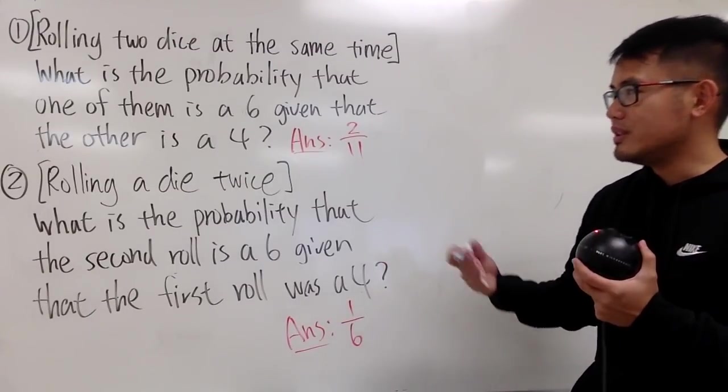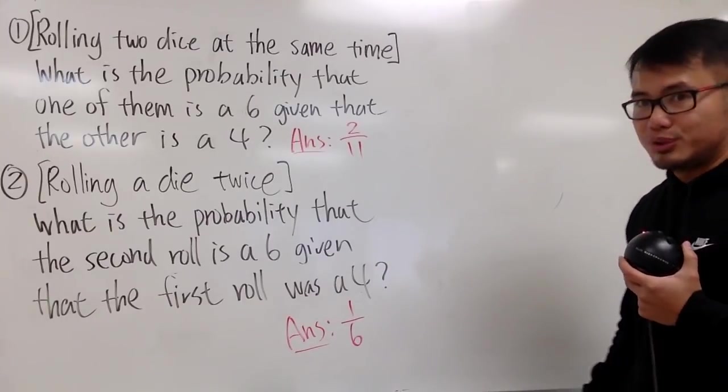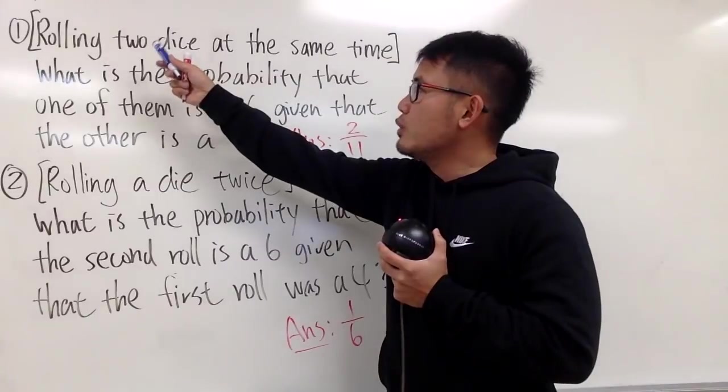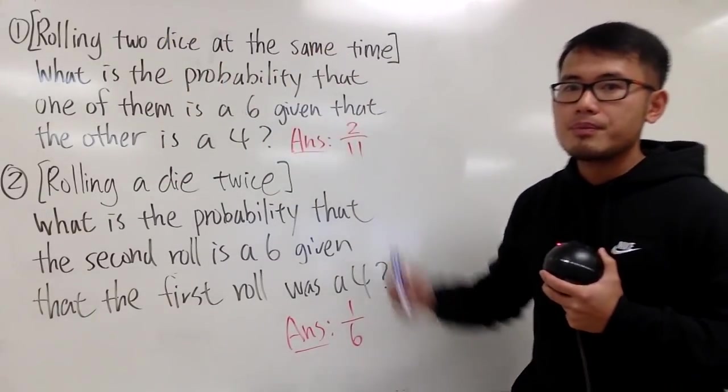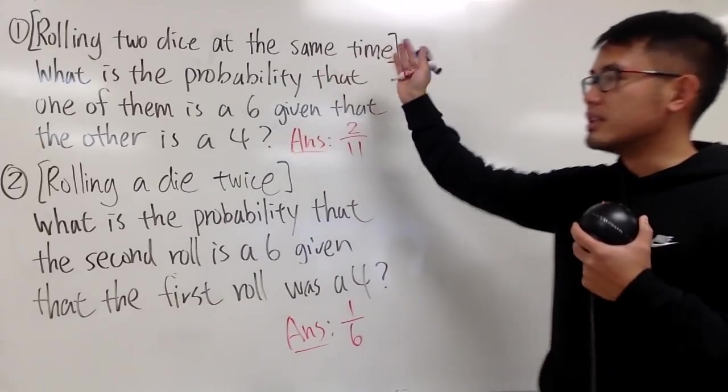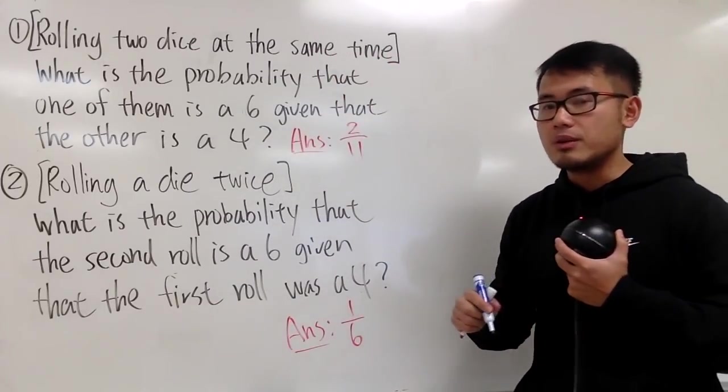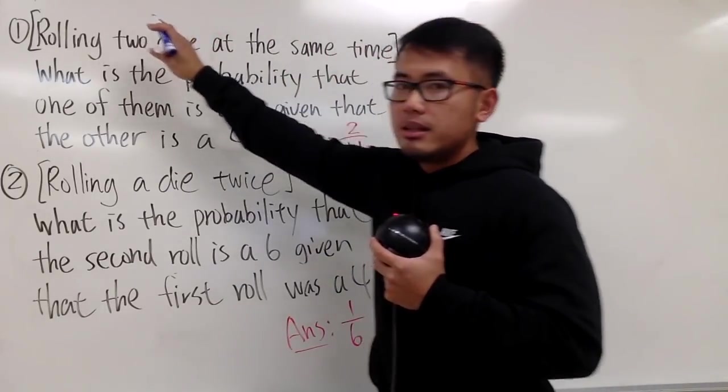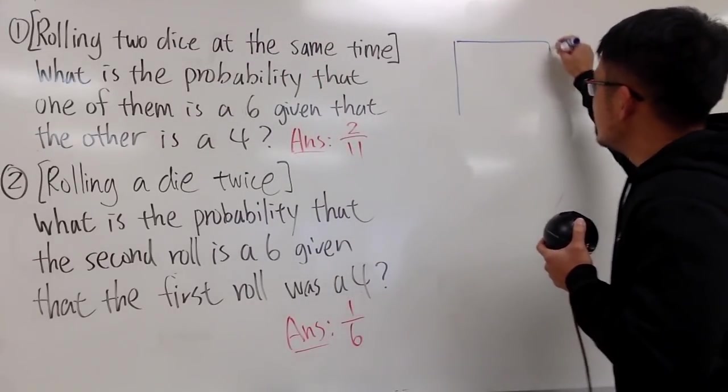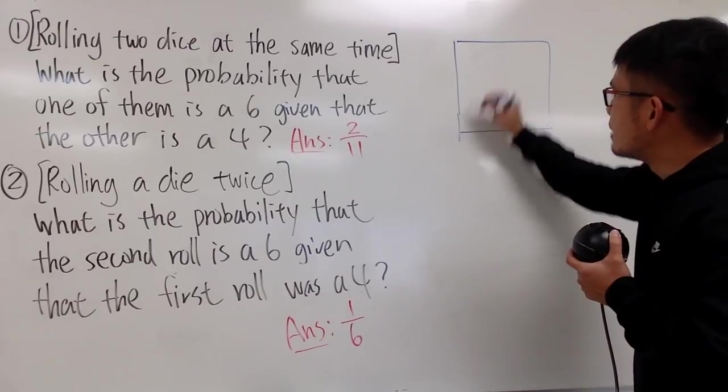And now, let me just go through these two questions with you guys. For the first one, let's look at the setup. We are going to roll two dice at the same time. We have two dice, and we are going to roll both of them. It's the same situation, the same setup like the previous video. Based on this, I will show you guys a sample space. So these are the possible outcomes that we may have.